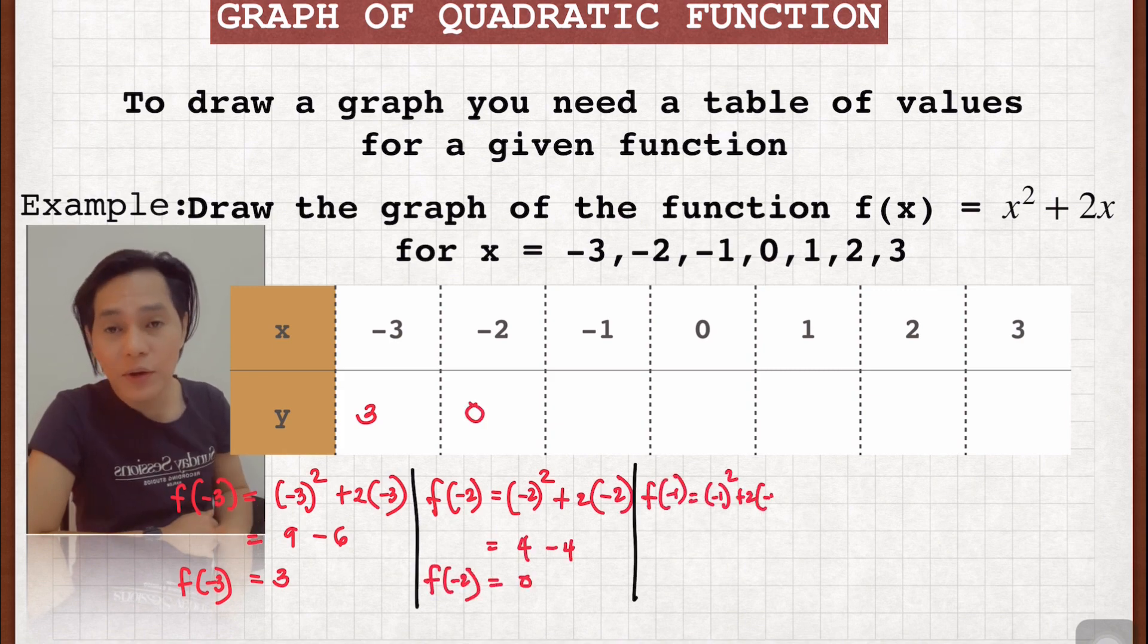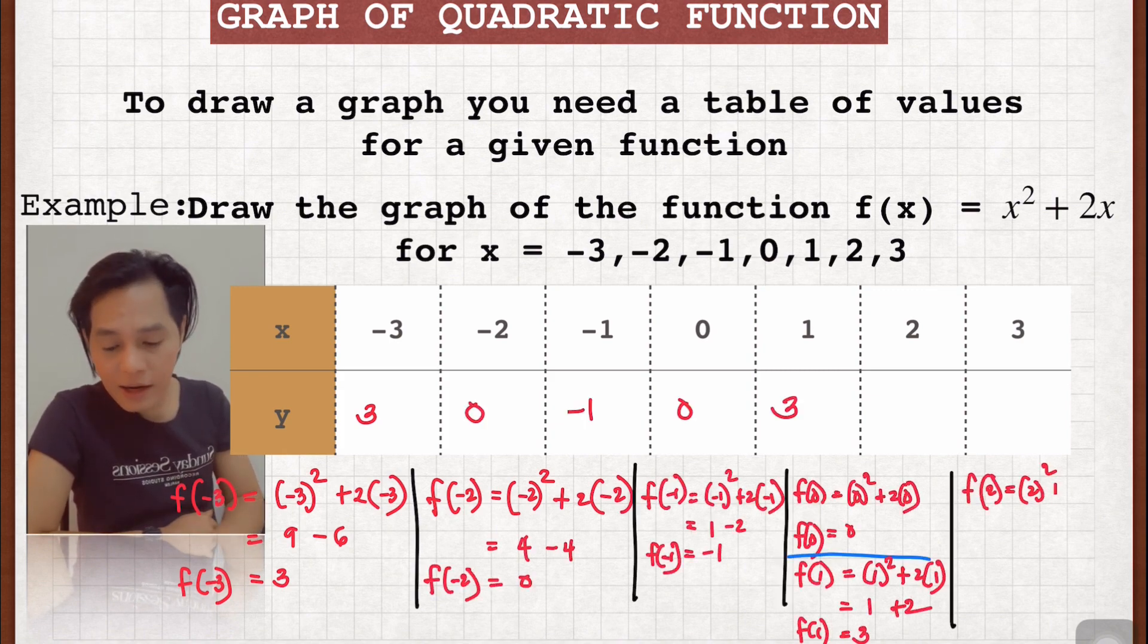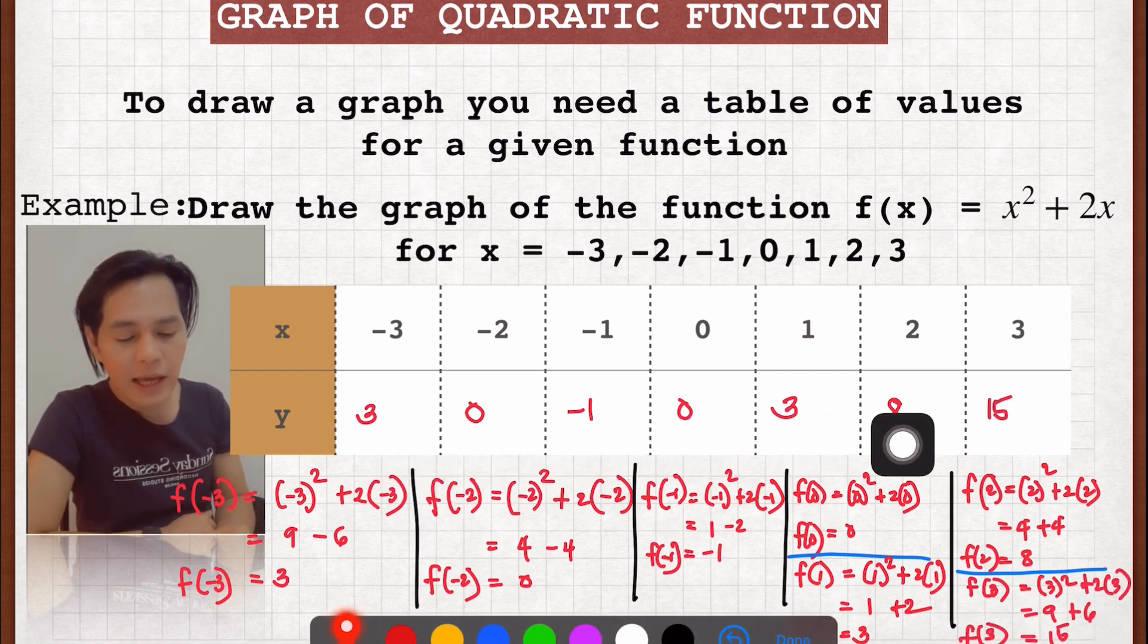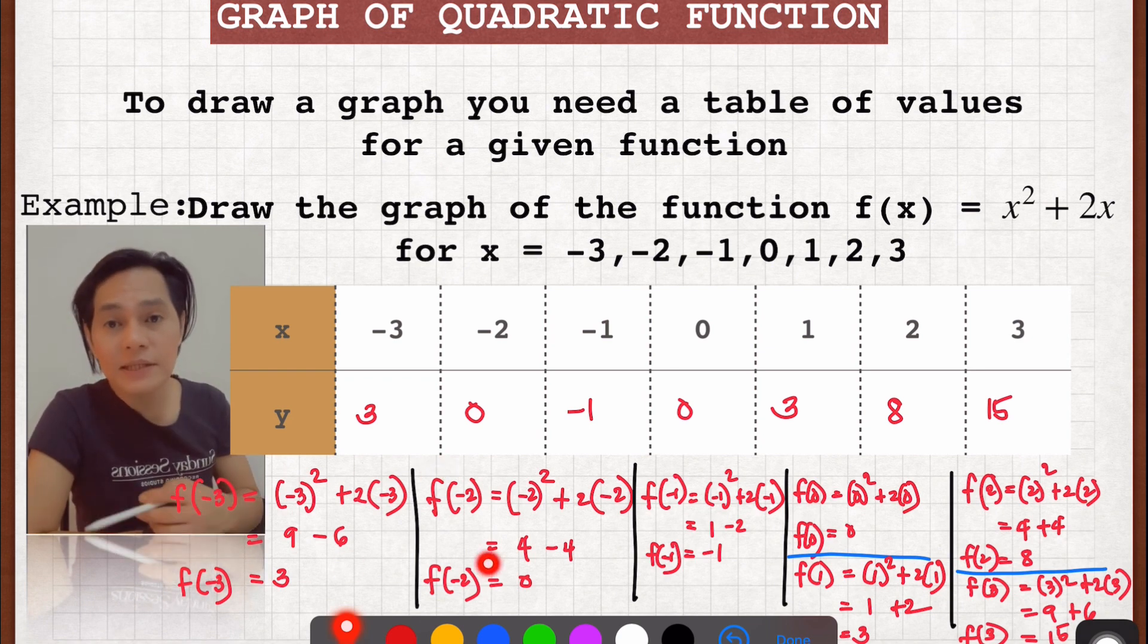And I am going to solve for y by just simply substituting the values in the given function. So there you go. The values of y are 3, 0, negative 1, 0, 3, 8, and 15. That's how you do that. Down below is the procedure on how to find out the values of y.